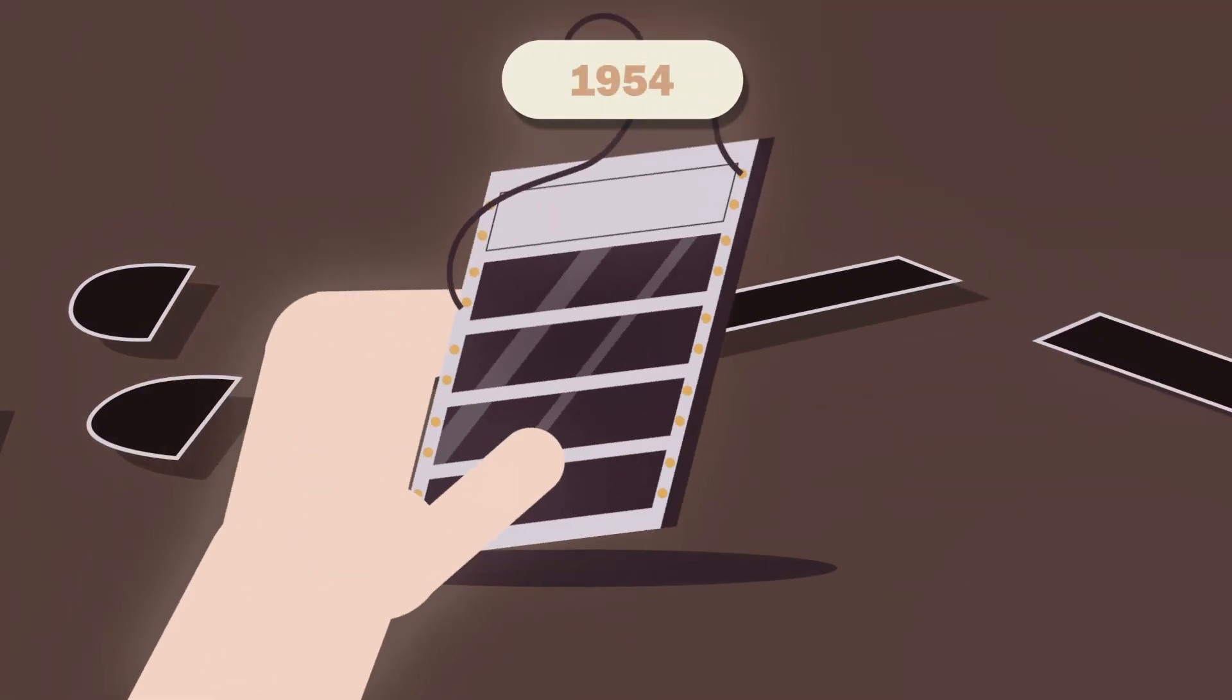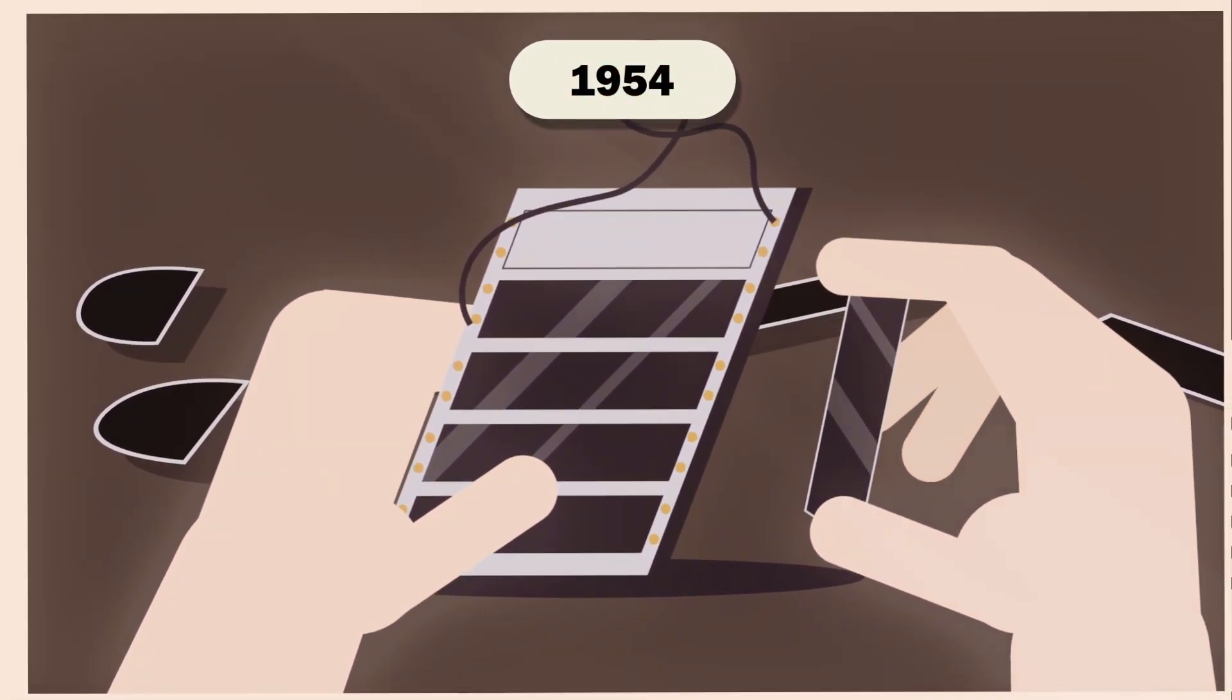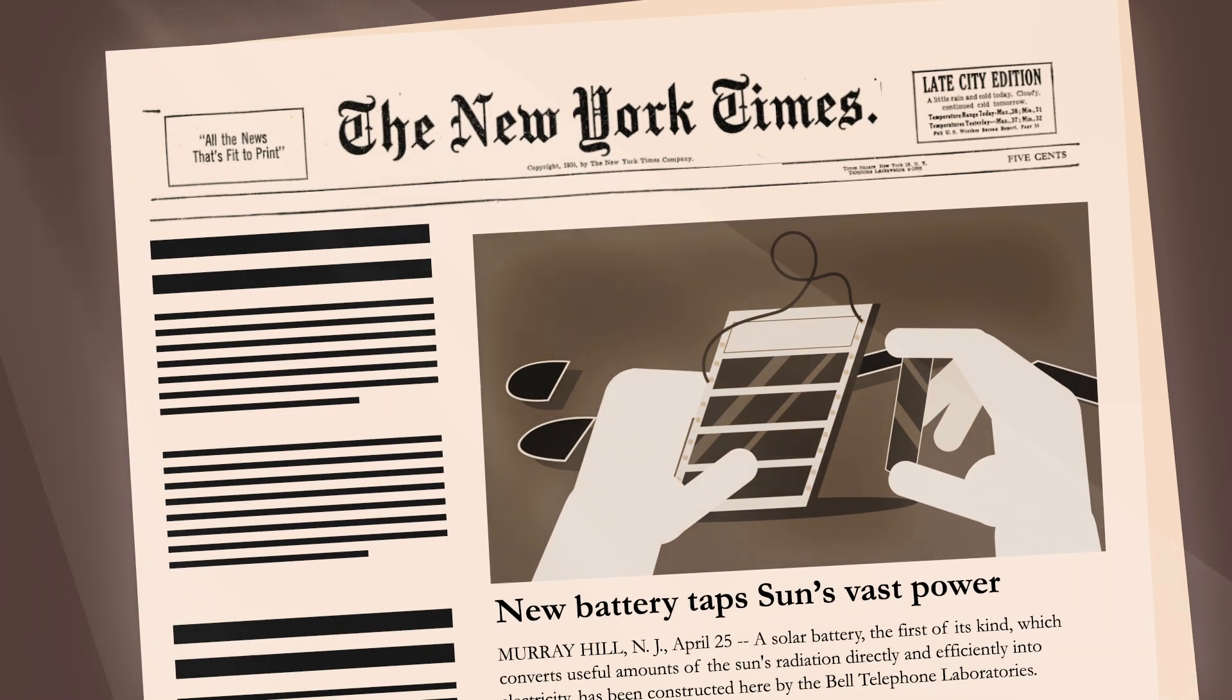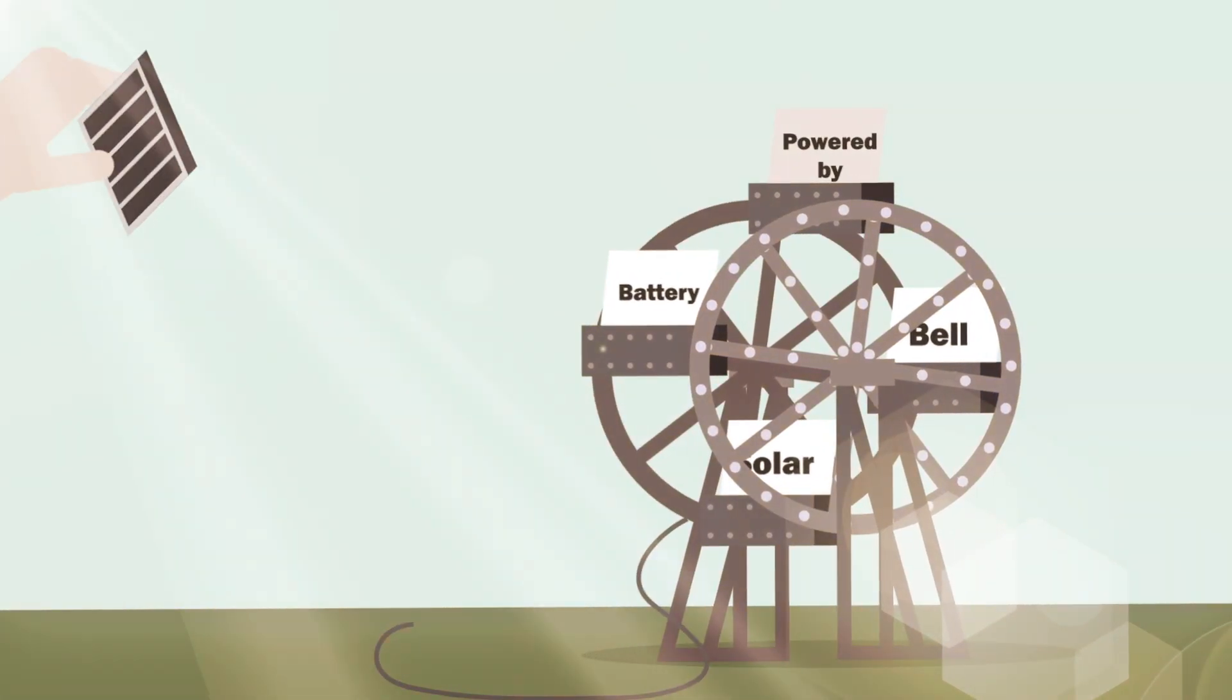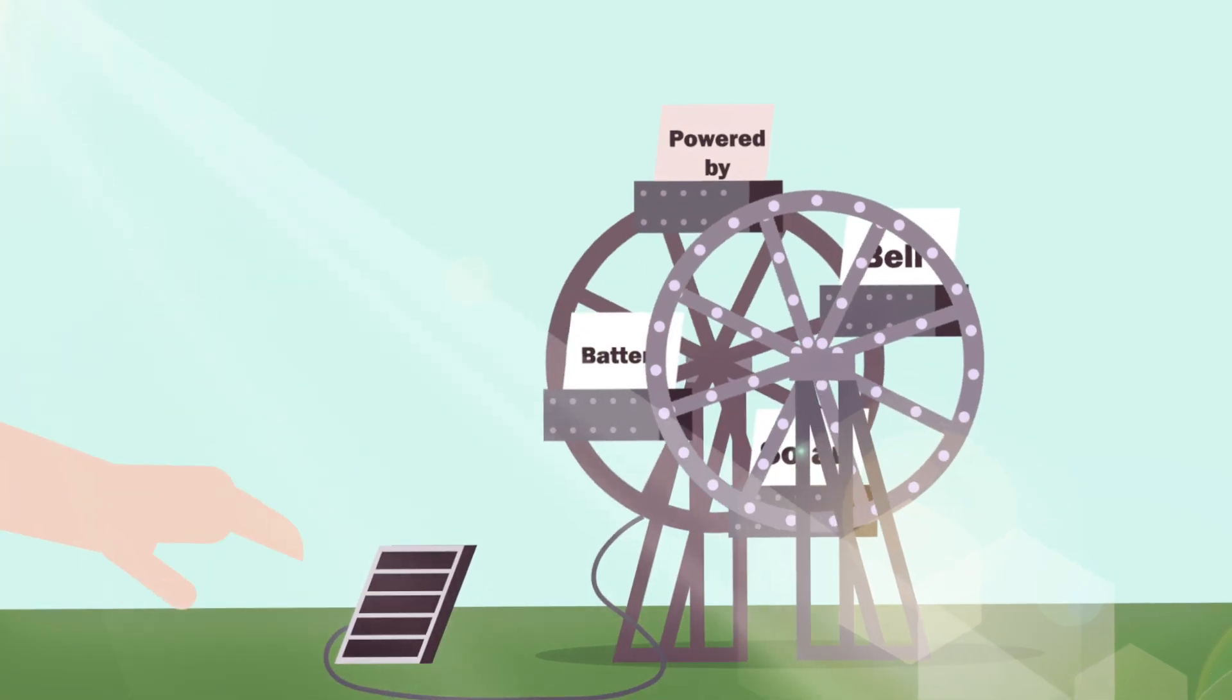On April 24, 1954, Bell Laboratories announced the construction of the first practical solar panel, using it to power a toy ferris wheel and a radio transmitter.